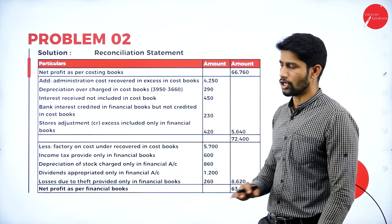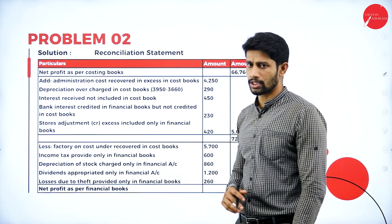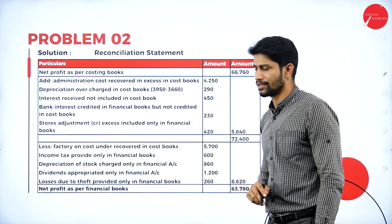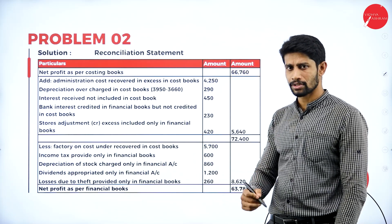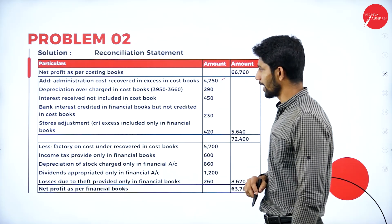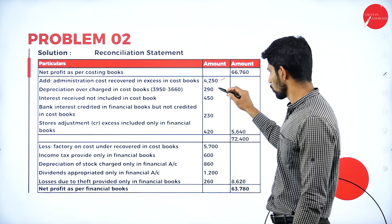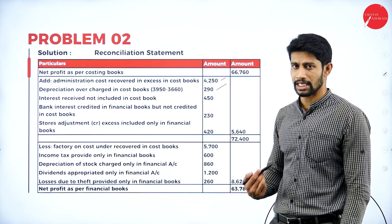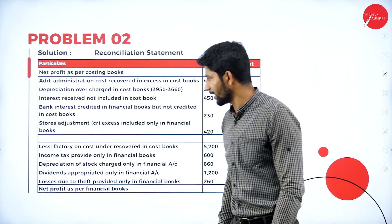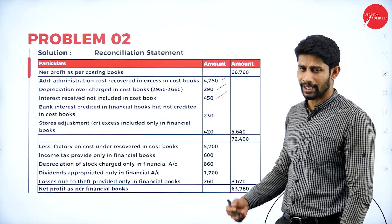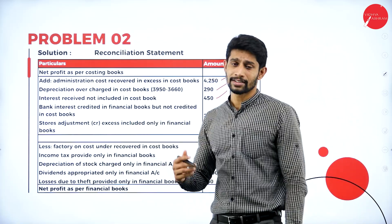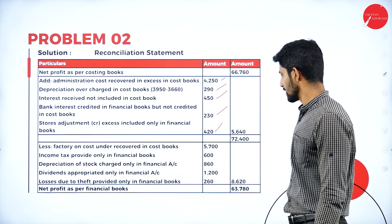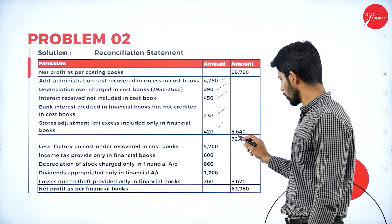Now prepare the reconciliation statement. Net profit as per costing books: Rs. 66,760. Add administration cost recovered in excess. Add the adjusted depreciation of Rs. 290. Add interest received not included in cost books. Add bank interest credited in financial books but not in cost books. Add stores adjustments credited. Total all additions: you will get Rs. 5,640. Add Rs. 5,640 to Rs. 66,760 to get a total of Rs. 72,400.